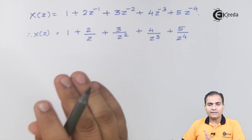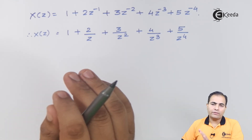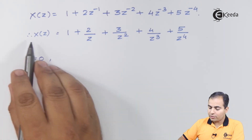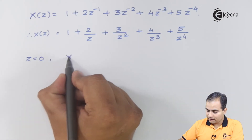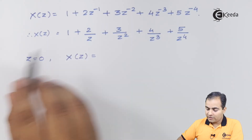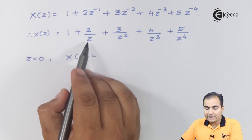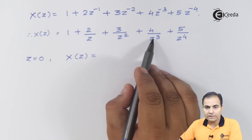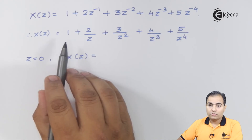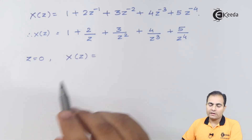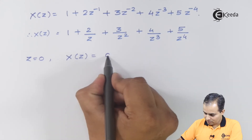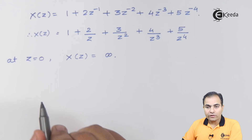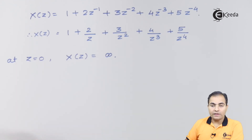If I substitute z=0 into the equation: the first term is 1, but 2/z = 2/0 = infinity, and similarly 3/z², 4/z³, and 5/z⁴ all give infinity. Since 1 plus infinity gives an infinite result, at z=0, X(z) gives an infinite result.